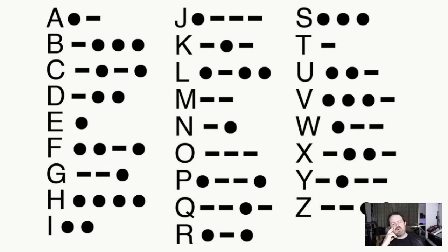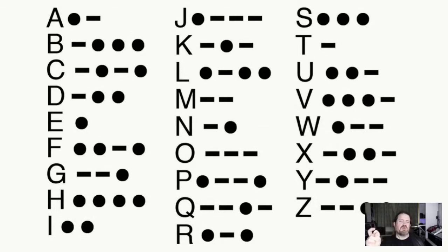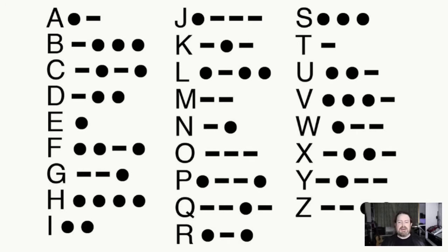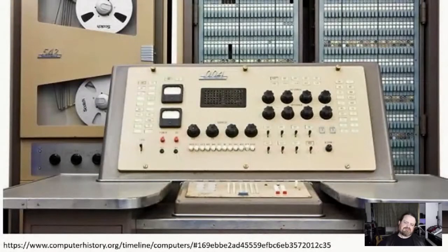Morse code looks like a binary encoding system — dots and dashes — but there's actually a third element: pauses and breaks, and the length of the breaks matters. Morse code is a time-based coding system. Think about SOS: dot dot dot, space, dash dash dash, space, dot dot dot. Those spaces matter, which means it's not a true binary system. About a hundred years after international Morse code was ratified, we got to a point where we realized computers were really good at ones and zeros but not good at Morse code.